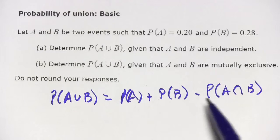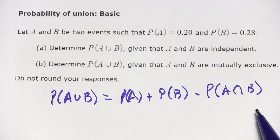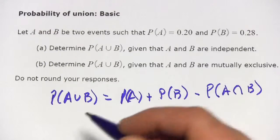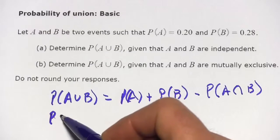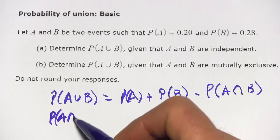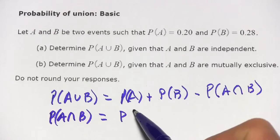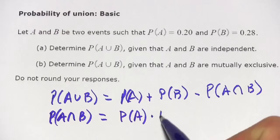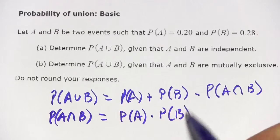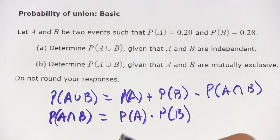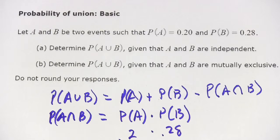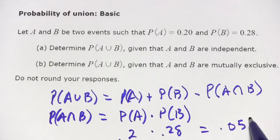We know the probability of A and B. We don't know the probability of the intersection, but that's not too hard to figure out. The probability of the intersection of A and B is just the probability of A times the probability of B. So in this case that's 0.2 times 0.28, which equals 0.056.